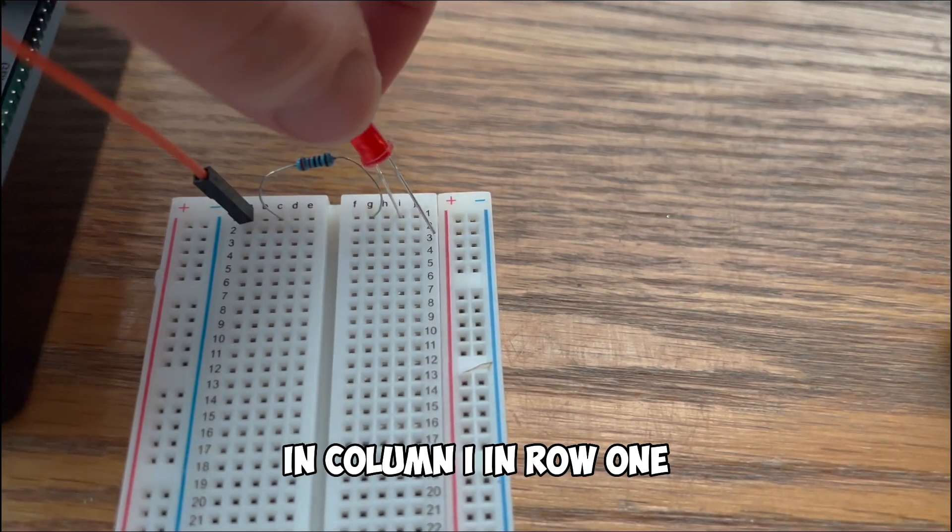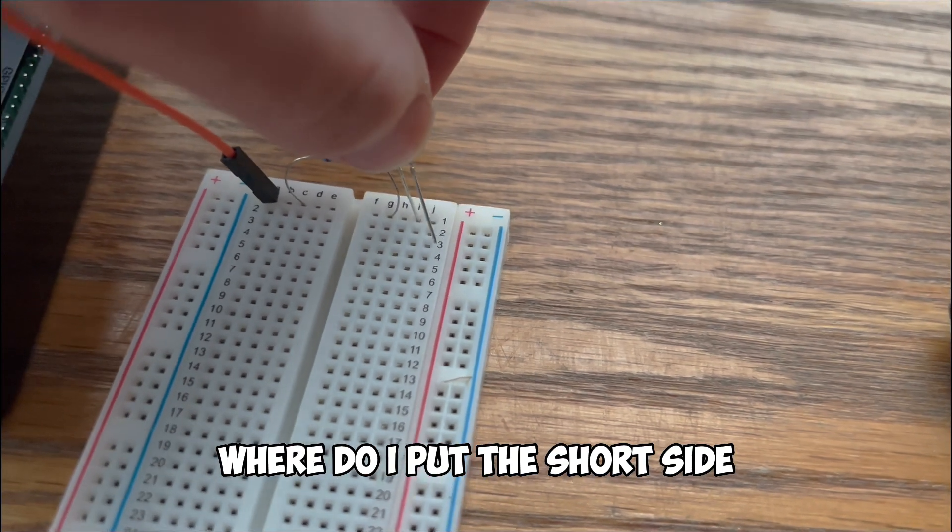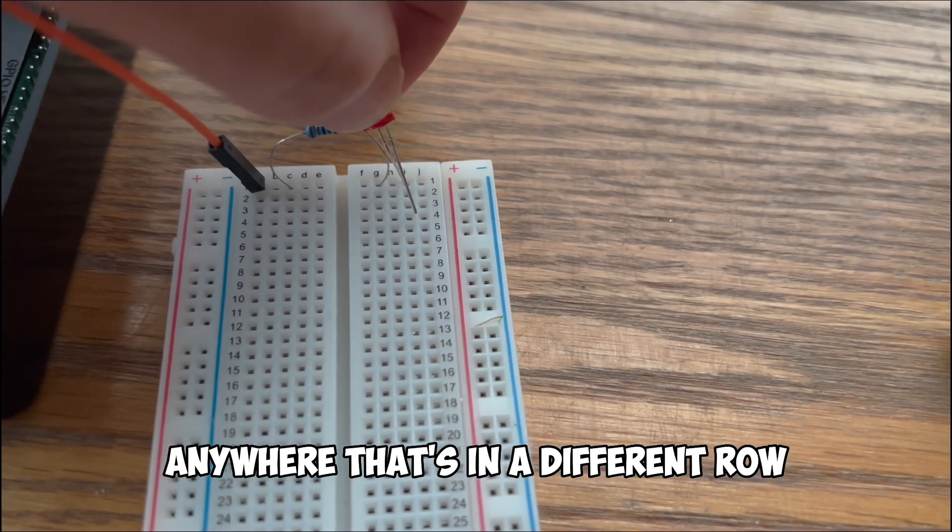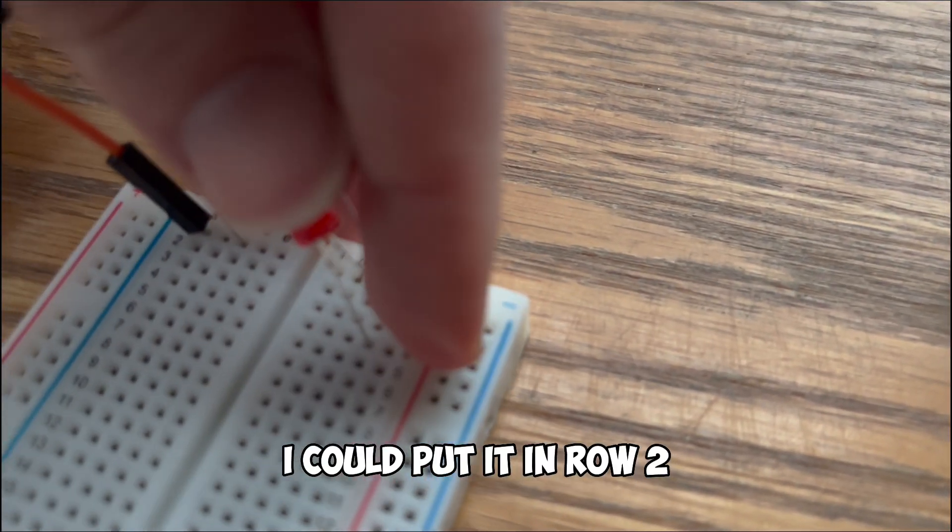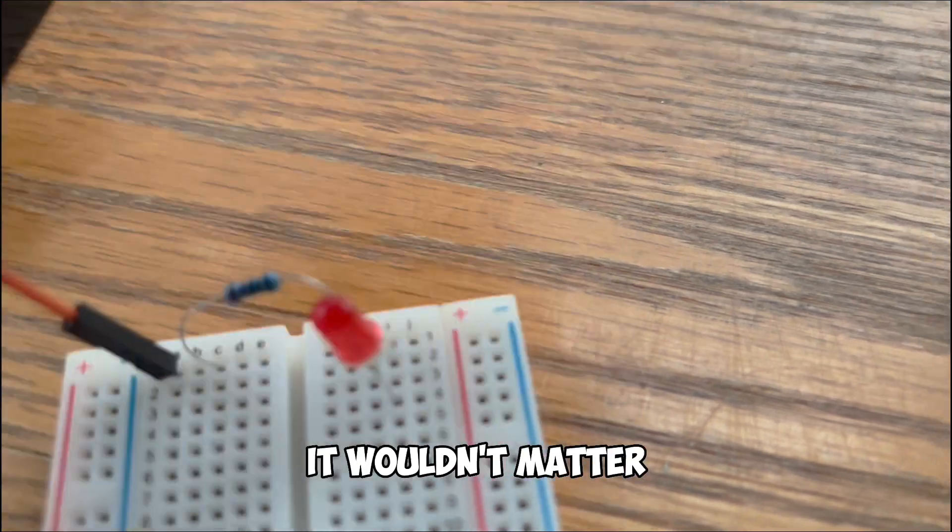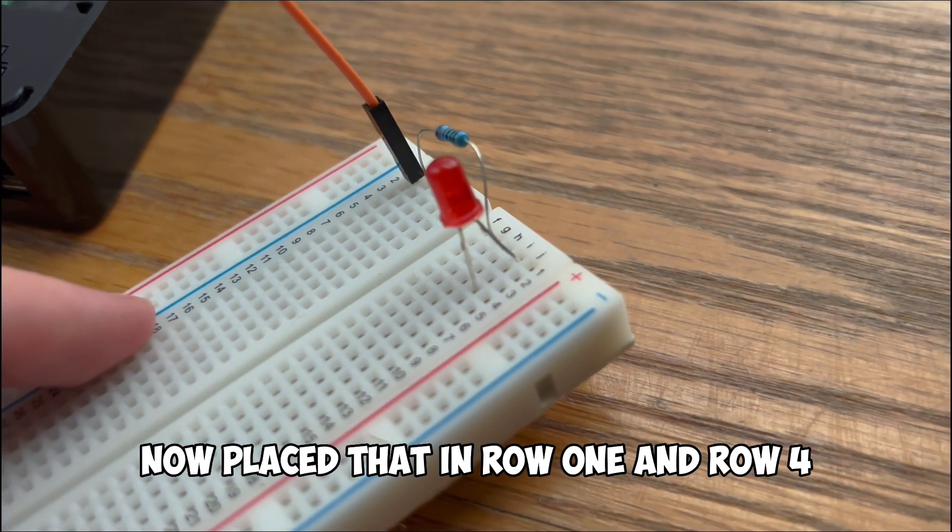So I've placed the long side here in column I in row 1 and you might be wondering where do I put the short side? And the answer is anywhere that's in a different row. So I'm going to go ahead and put that in row number 4. I could put it in row 2, row 3, row 4, it wouldn't matter.